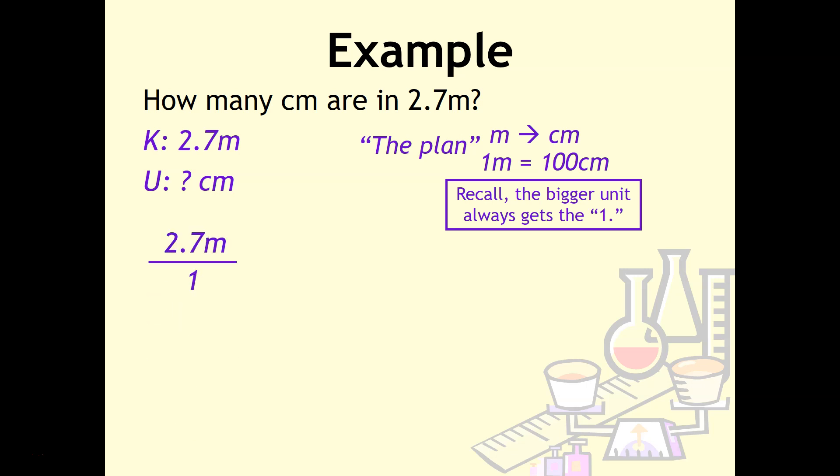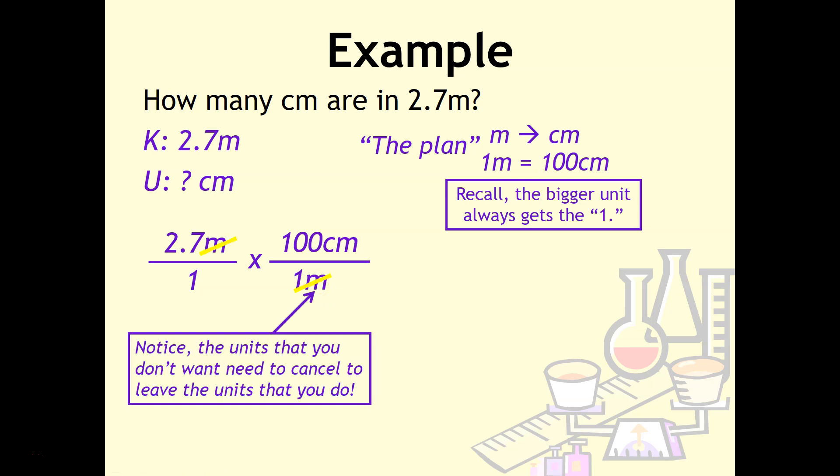Next, we take our known and put it over one. Then we draw our multiplication sign and line. Remember, the known units have to go in the denominator. Since we have meters on top, meters has to go on the bottom. Our conversion factor tells us to put one meter on bottom and 100 centimeters on top. The really cool thing about dimensional analysis is we've got meters over meters. Like in math class, if you had X over X, those divide out. So these units cancel out to leave the unit you want—centimeters. Next, we do our multiplication and get 270 centimeters.